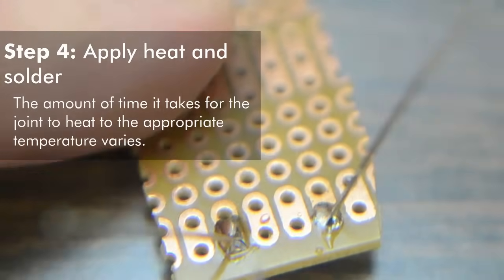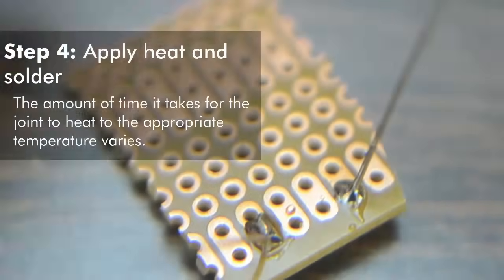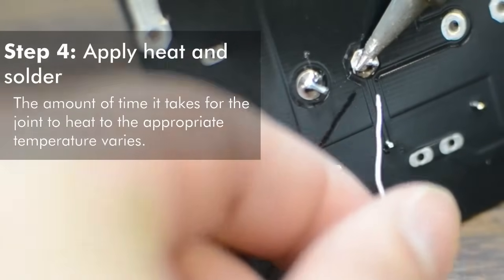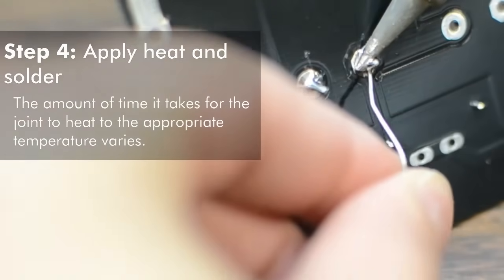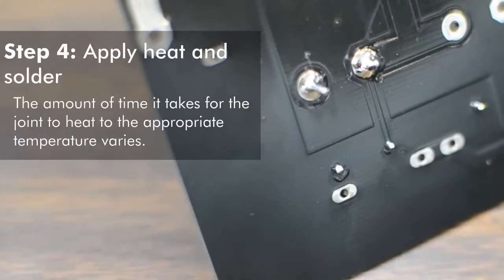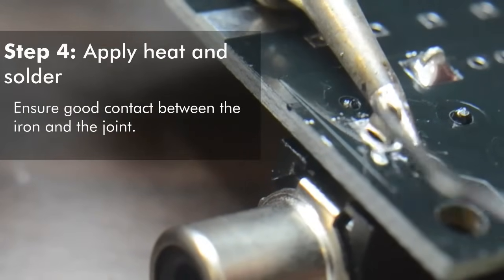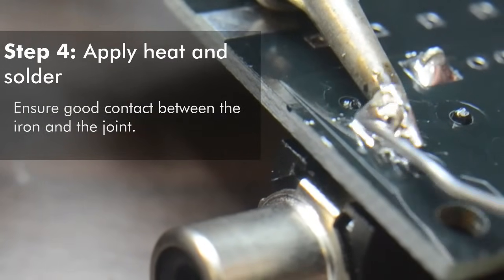The amount of time it takes to heat the joint depends on its size, the temperature, and the power of the iron. Tiny connections can take a few seconds, but large connections dissipate more heat and will take longer. Remember to make as much contact as possible between the iron's tip and your part. Hold the flat edge of the iron's tip against the joint, not just the point of the iron.